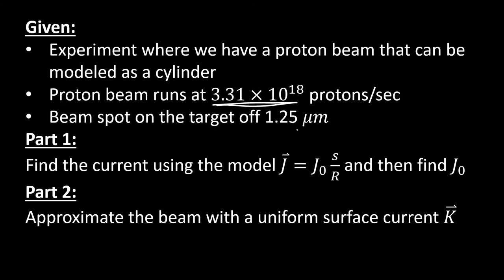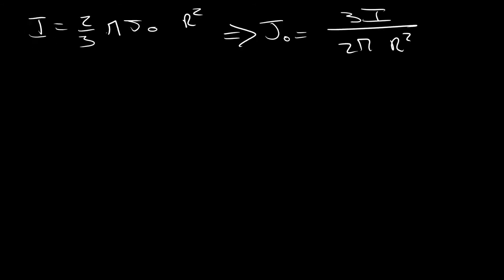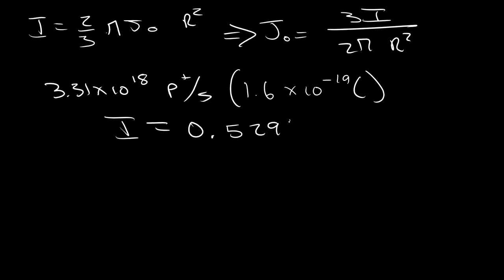And now this is pretty simple because we're given, if you recall, this proton beam that runs at 3.31 times 10 to the 18 protons per second, and we're given our radius also. But we need to consider the fact that a current, the units of current, is coulombs per second. And so we know that protons have the opposite charge of the electrons, and so we can easily convert this proton beam into coulombs per second, so we can get a current from this. So we can take our 3.31 times 10 to the 18 protons per second, and we can multiply that by the charge of a proton, which is 1.6 times 10 to the minus 19 coulombs.